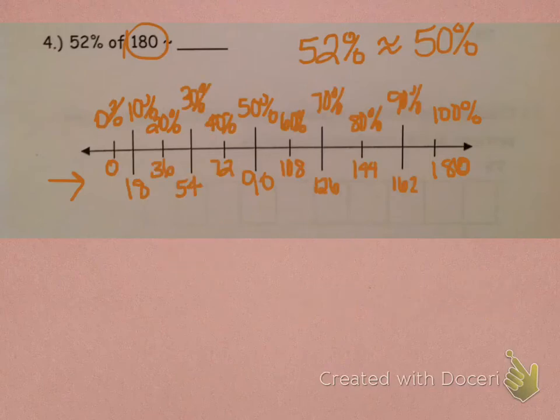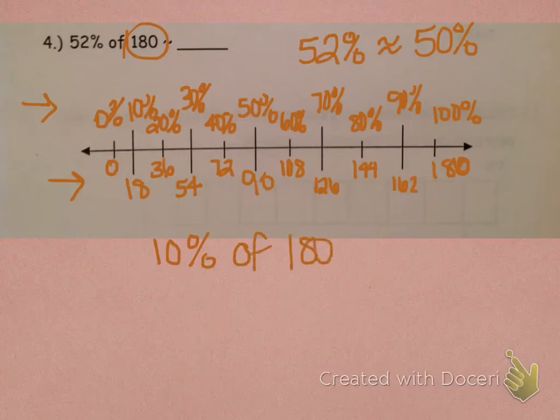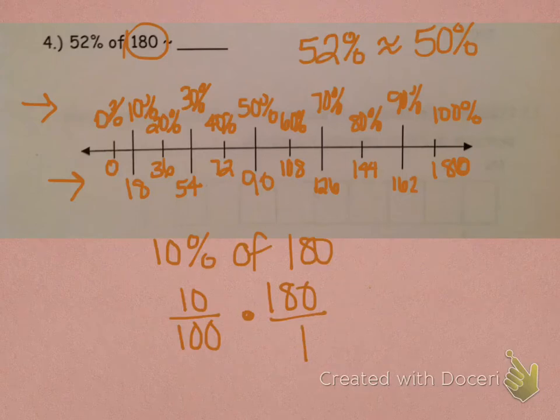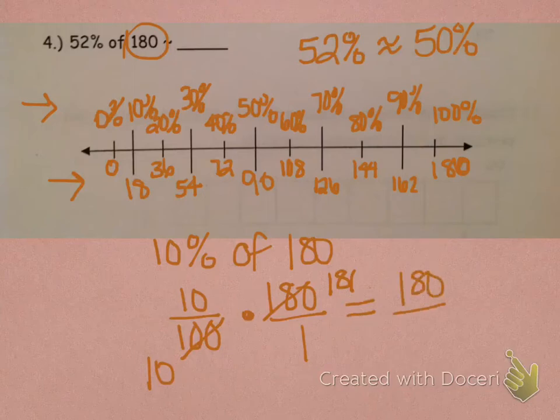Okay. So, you should have labeled in increments of 10% up here on the top. On the bottom, our first answer is 18. Because if we look at this, 10% of 180. That's what you're thinking about when trying to figure out that first slot. So, remember, if we have 10%, percent is out of 100. That means we have 10 out of 100 times 180 over 1. So, we could say that 10 goes into 100 ten times, and into 180 eighteen times.